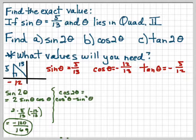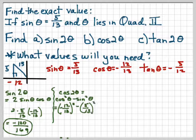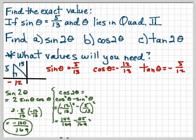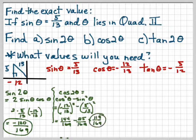Cosine of 2θ equals cosine squared θ minus sine squared θ. Taking (−12/13)² minus (5/13)² gives us 144/169 minus 25/169. Remember, negative 12 over 13 squared is positive 144/169, which gives us 119/169.